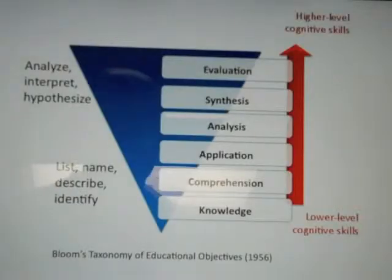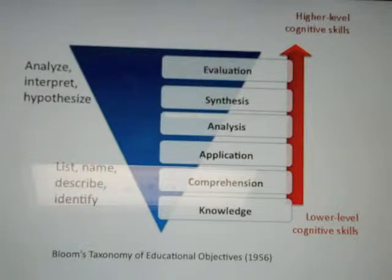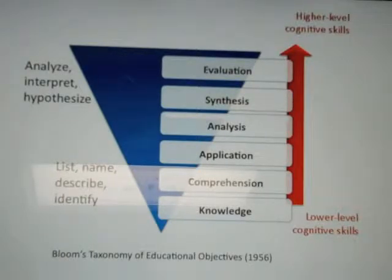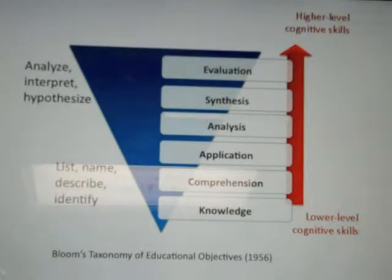Bloom's Taxonomy is a framework developed in the 1950s by Benjamin Bloom and his colleagues. They designed it as a way for test writers to communicate in a similar language about the kinds of assessment questions they're asking. Bloom's Taxonomy is illustrated here, and what you can see is that it's a nested hierarchy — a series of six levels of cognitive complexity. Starting at the bottom are tasks that are easier for the brain to do: things like listing, naming, describing, or identifying, which Bloom would classify as lower-level cognitive skills.